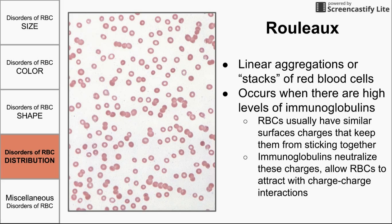Rouleau — from the French word meaning a roll, like a stack of coins — is a linear stack of red blood cells visible on the blood smear. Normally, red blood cells have a surface charge on their outer membranes that keeps them from sticking together. When there are too many antibodies or immunoglobulins that neutralize these charges, the red blood cells can attract each other through charge interactions and form these long stacks called rouleau.